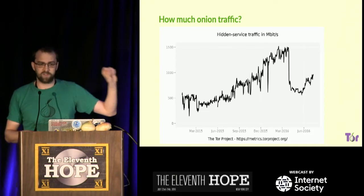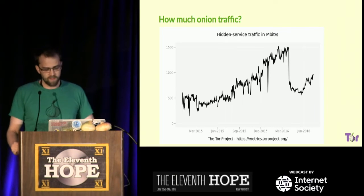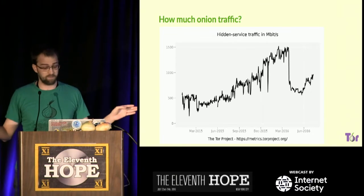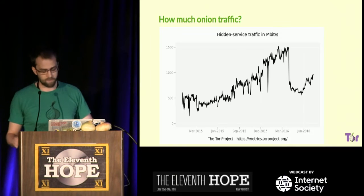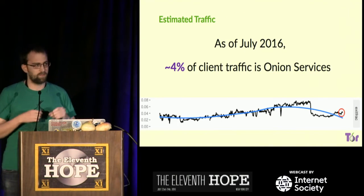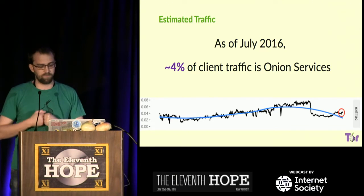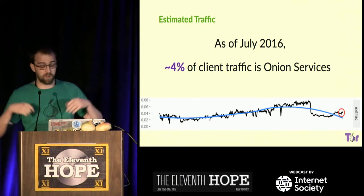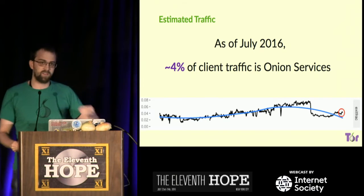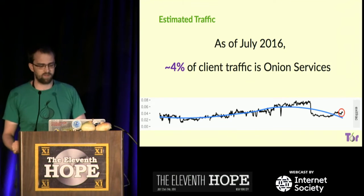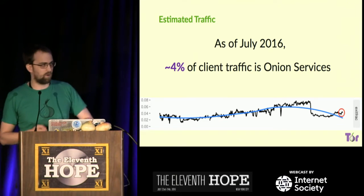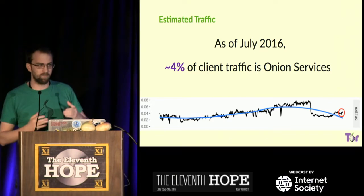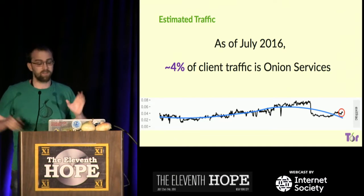These are the two statistics we have: the number of onions and the traffic. Something dropped — maybe someone leaked something huge and it stopped; we don't know. But overall, what this gives us is a way to show that onion services are still a very low amount of the overall Tor network traffic — around 4% of the overall traffic in the Tor network. So when you hear in media or government propaganda that Tor is only bad things in the dark web, remember that it's only 4% of traffic, and within that 4%, it's also a small percentage.